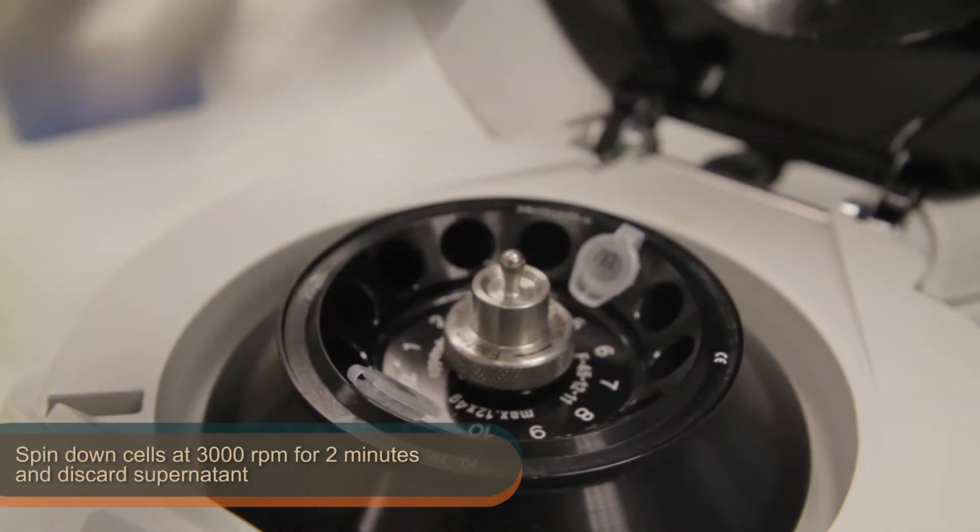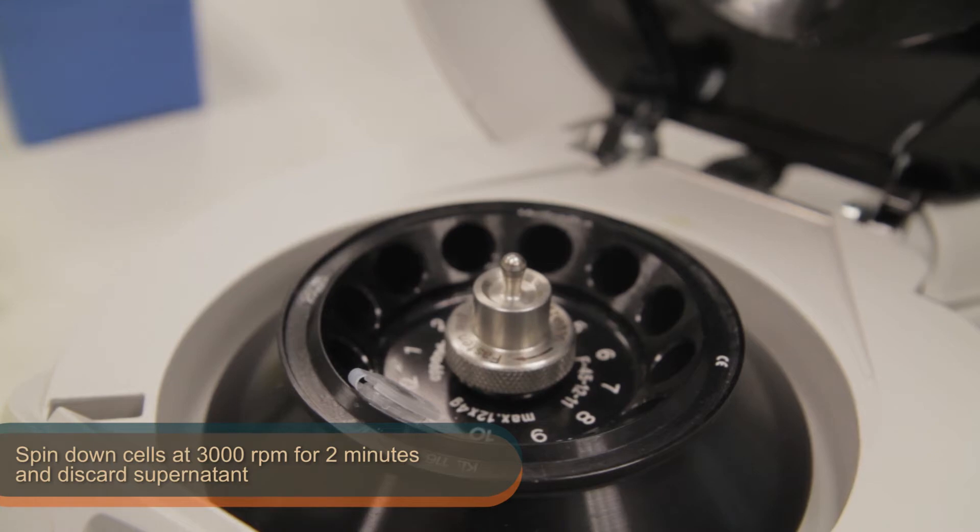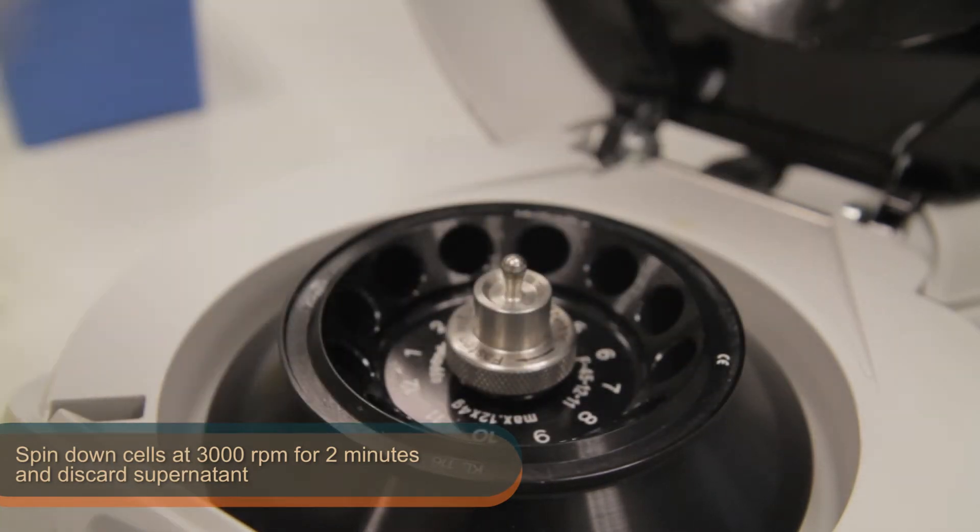Then, spin down the cells at 3000 rpm for 2 minutes and discard the supernatant carefully.